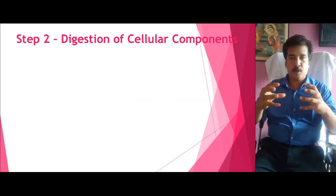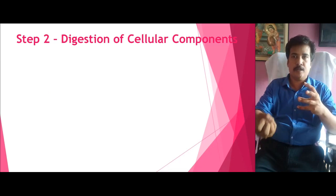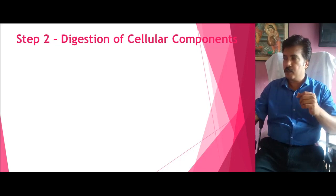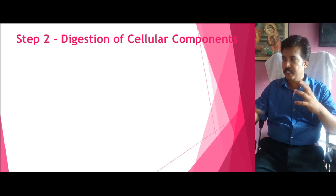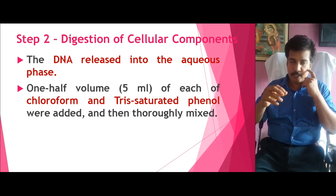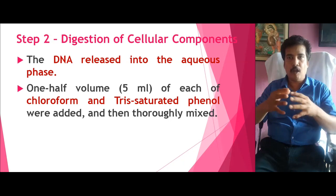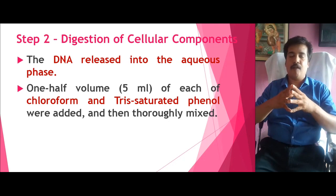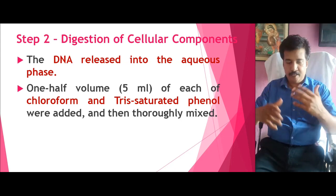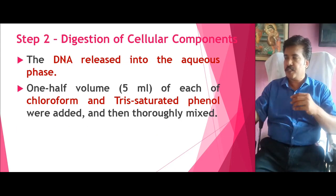Since the cell wall is broken, all components have been released into the test tube carrying both DNA and other cell organelles. The next objective is to get the nucleic acid — we do not want the other materials. So we have to digest all other bacterial components. The second step is the digestion of bacterial cell components. We treat this with a combination of chloroform and tris-saturated phenol. This phenol-chloroform solvent universally dissolves all fatty acids, lipids, and proteins — the major components of the cell wall and other cellular components — leaving the nucleic acid behind. It is then centrifuged.